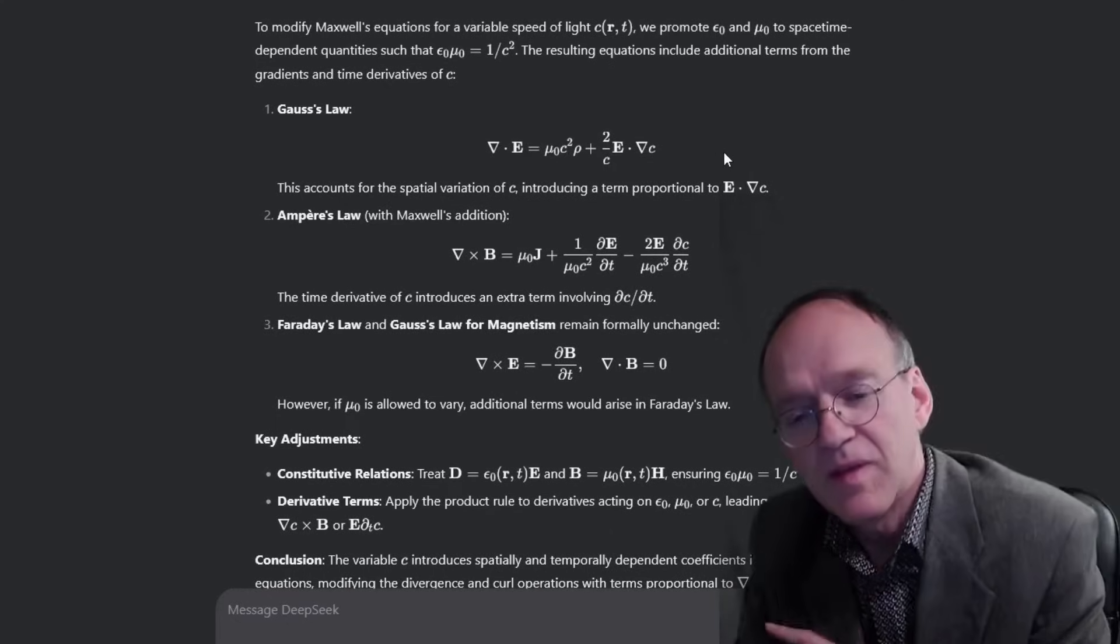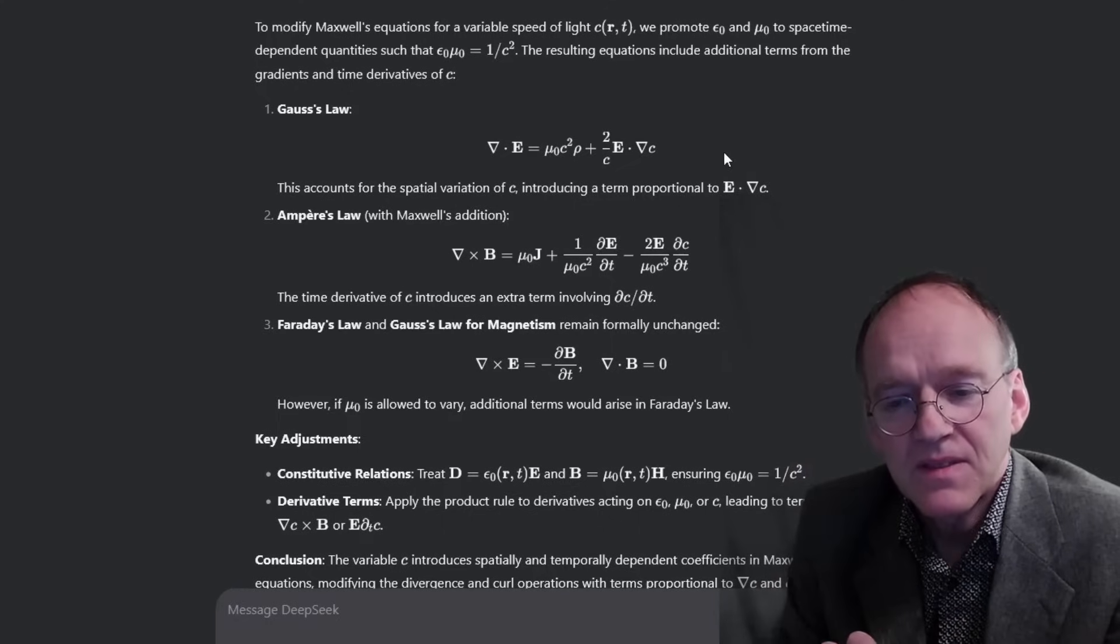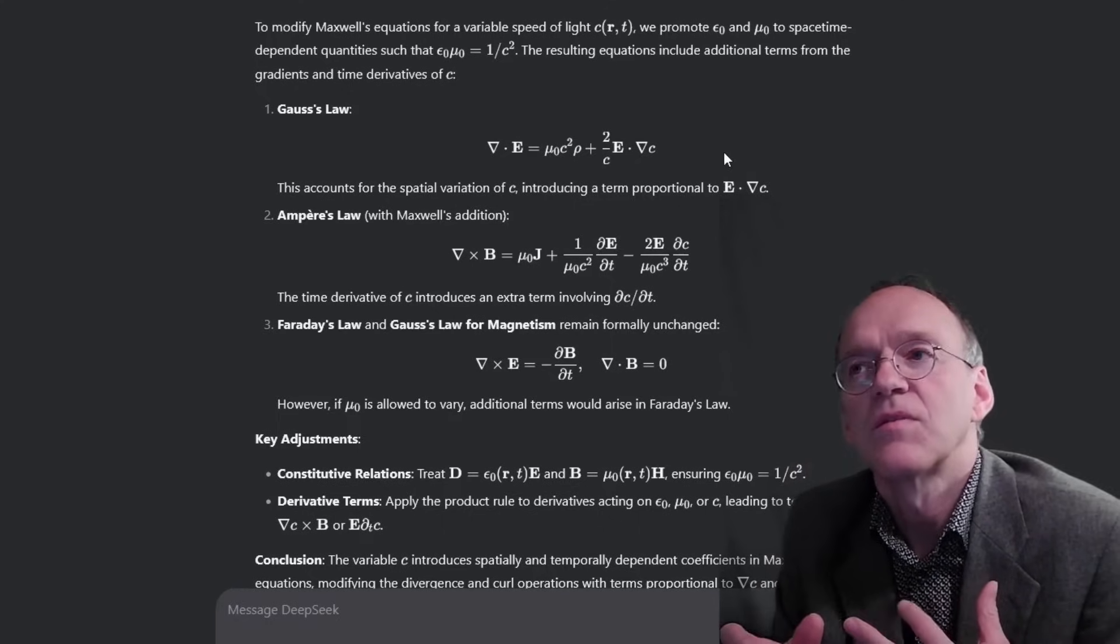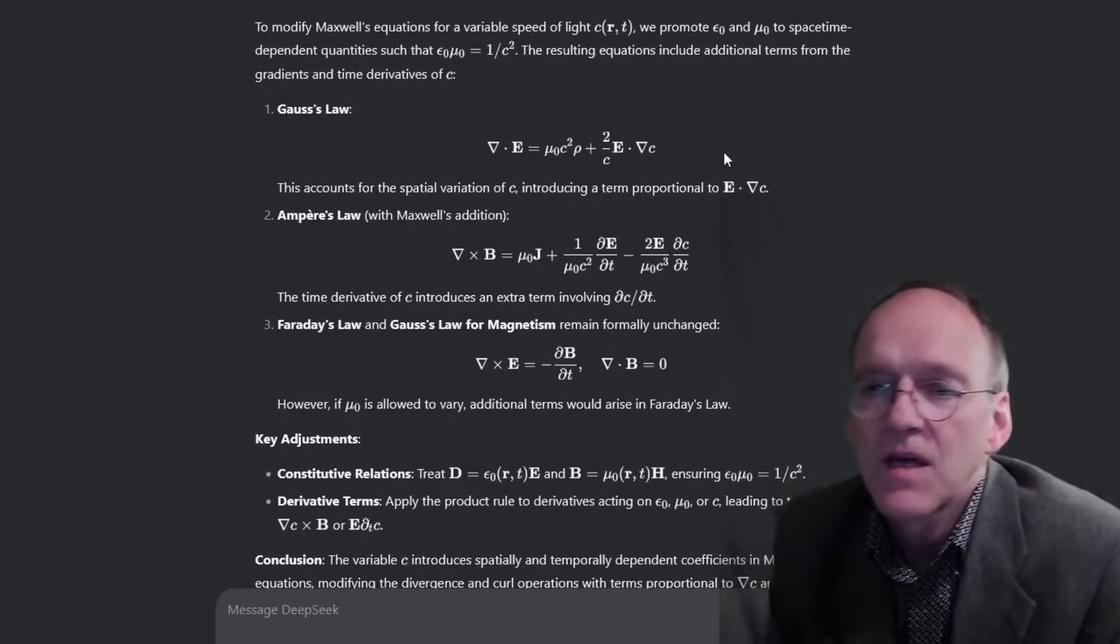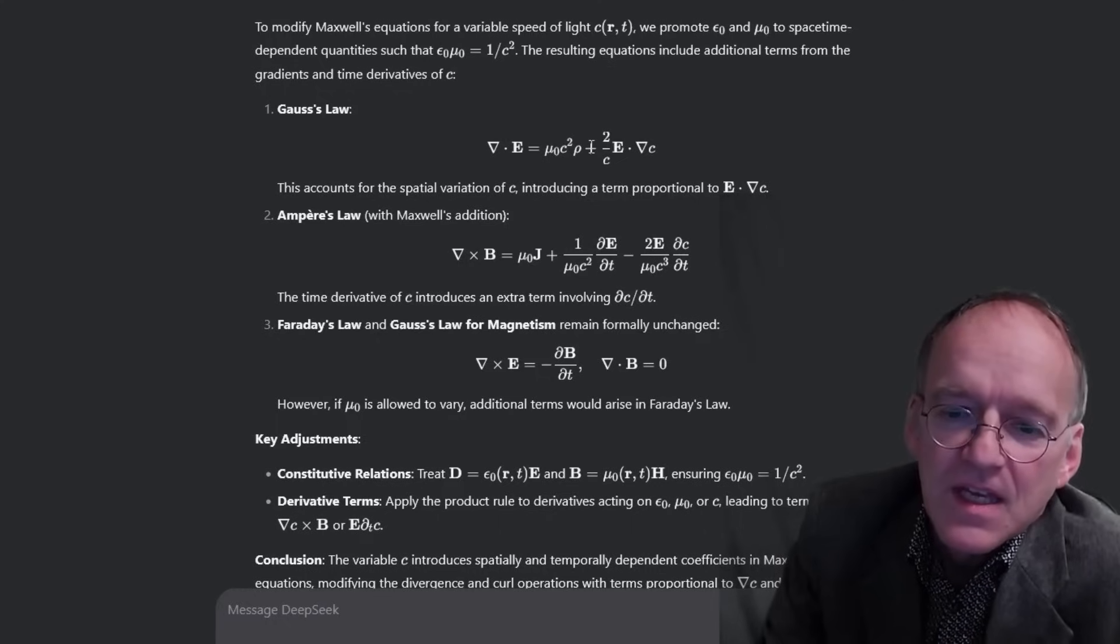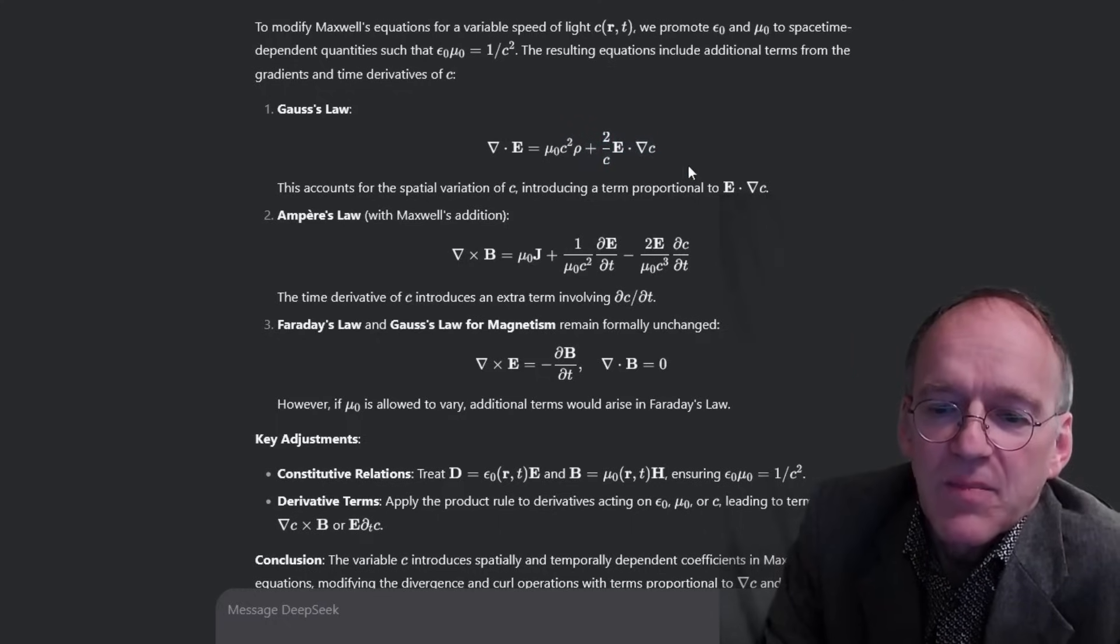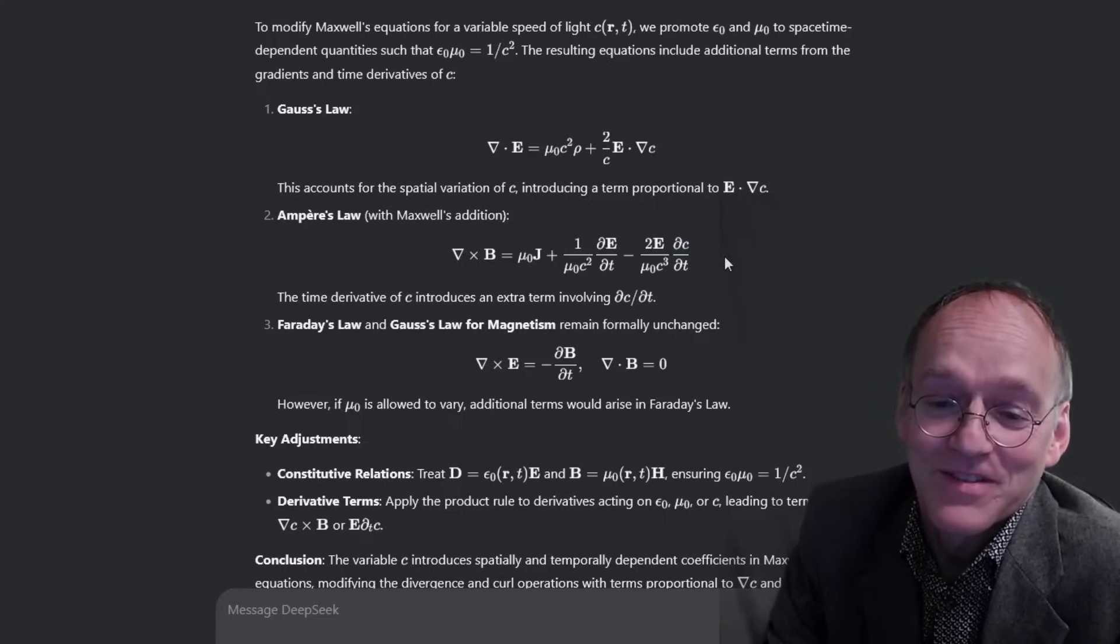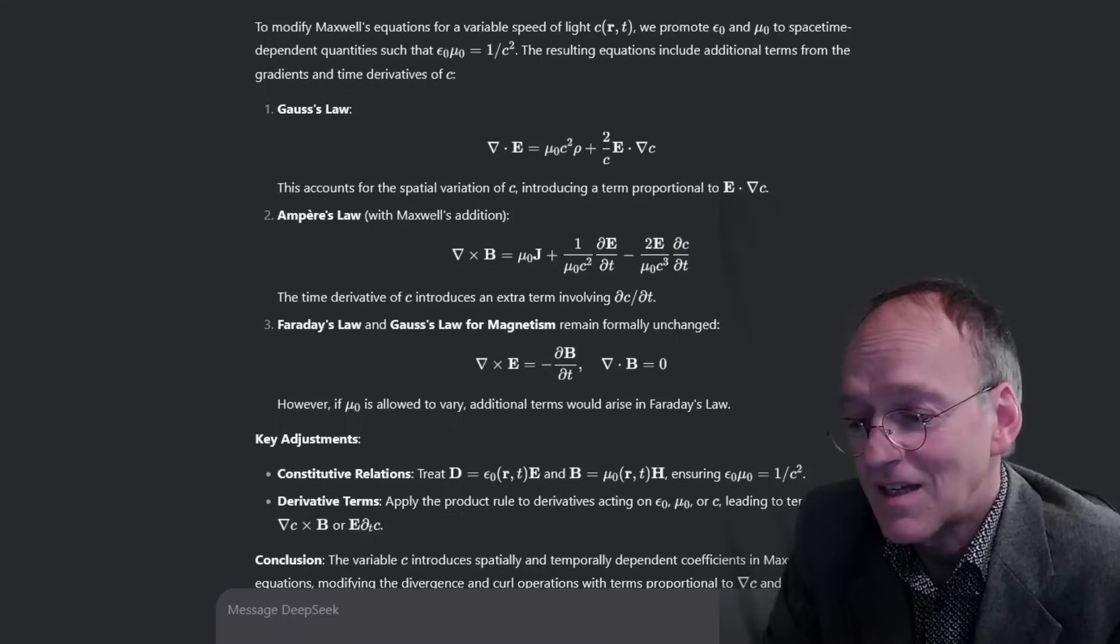He considers the variability of the speed of light, but he goes back to the original problem. Instead of putting it into the epsilon naught mu naught, he formulates it with an extra term depending on the gradient of c and on the time derivative of c. Now this is really insane, and I'm impressed by the result but also by the thinking process.